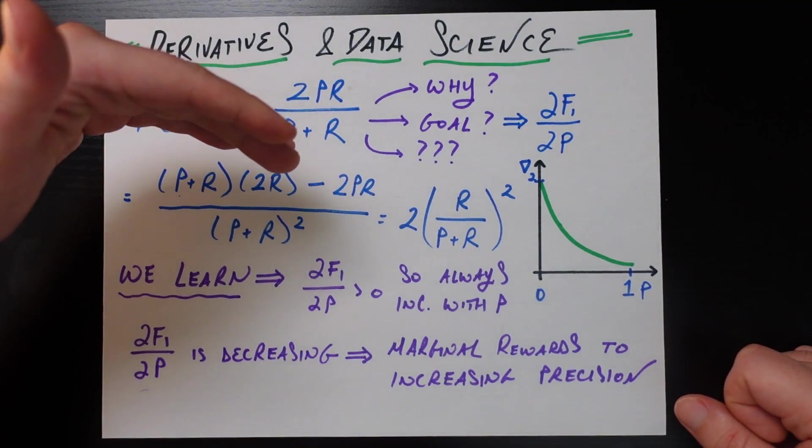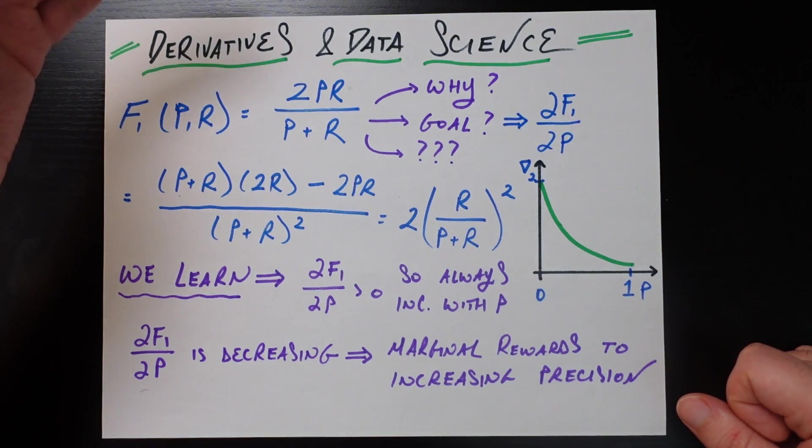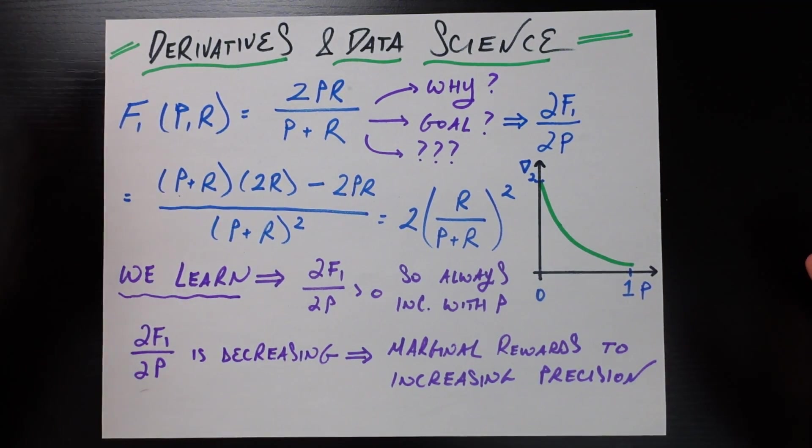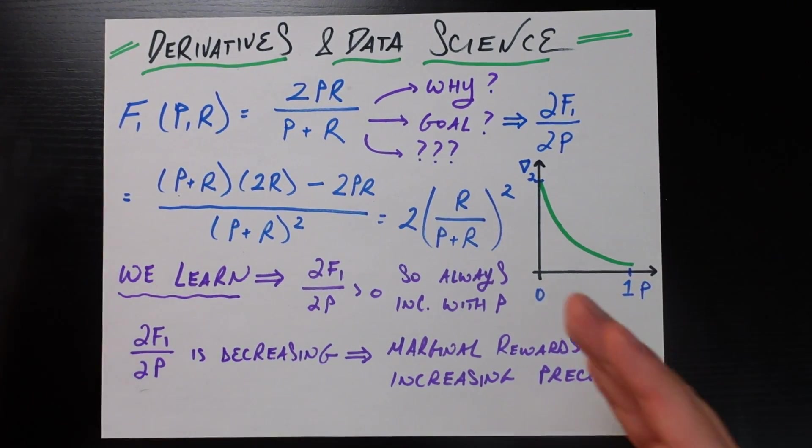F1 score is always going to increase for an increase in precision. And that was a little bit tricky to see with the original formula because precision occurs in both the numerator and the denominator here. So it's a little bit to just say looking at that, if I increase precision, well, that's going to make the numerator go up, but it's also going to make the denominator go up. So is that going to have an overall positive impact on F1 score always? Or is it sometimes positive, sometimes negative? By taking this very simple derivative, we found that no, it is always a positive effect.